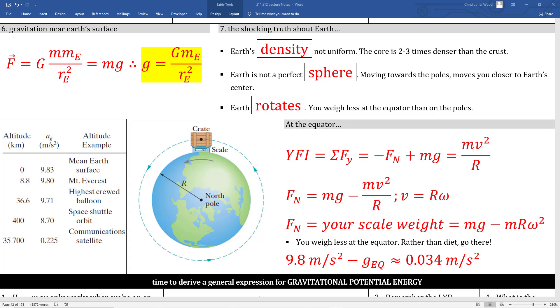Box number seven gives three really interesting facts about the earth. Its density isn't uniform, it's not a perfect sphere, and it rotates, which means if you stand on a scale on the equator, your weight is less. This lower left box shows some interesting data. If we assume the earth was a perfect sphere, the gravitational constant would be 9.83 meters per second squared.